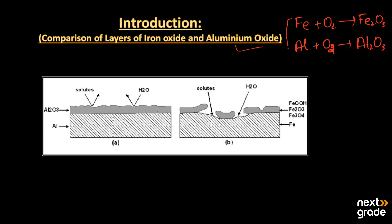Both aluminum and iron have the property that they can make their oxides easily. However, although both are oxides of metals, there is a comparison and difference between them according to their structure and according to their durability.